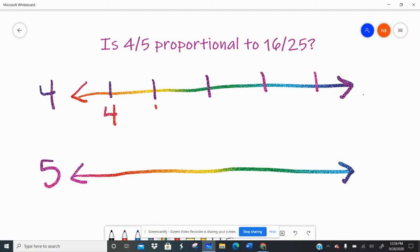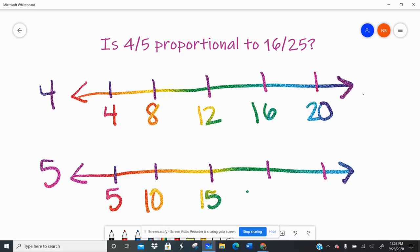So four, eight, twelve, sixteen, twenty. And if you're not great with your facts, then obviously you can use a calculator to fill these in and that's fine too. And for the fives, five, ten, fifteen, twenty, and twenty-five.